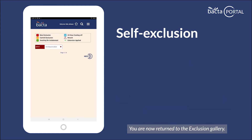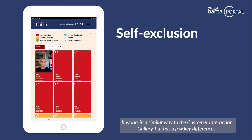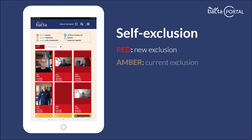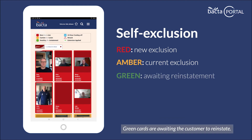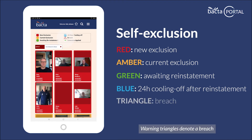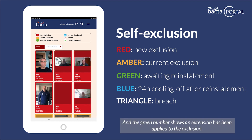You are now returned to the exclusion gallery. It works in a similar way to the customer interaction gallery but has a few key differences. Red cards denote a new exclusion. Amber cards are a current exclusion. Green cards are awaiting the customer to reinstate. Blue cards are customers in their 24-hour cooling off period. Warning triangles denote a breach, and the green number shows an extension has been applied to the exclusion.